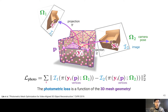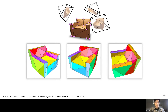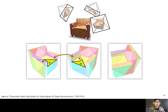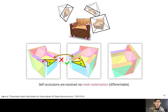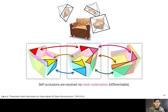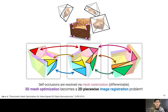By densely sampling all 3D points on the mesh surface, we can deform the entire 3D mesh using only photometric information, considering all consecutive frame pairs in the video sequence. We handle self-occlusion by rasterizing the 3D mesh — triangle colors indicate different triangle indices. We only include point pairs whose projections are consistent, i.e., project onto the same triangle in both frames, and leave out pairs projecting onto different triangles. When considering all triangles, we effectively deform the entire 3D mesh, turning the mesh optimization into a 2D piecewise image registration problem.